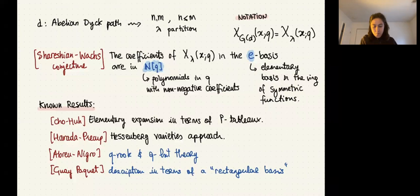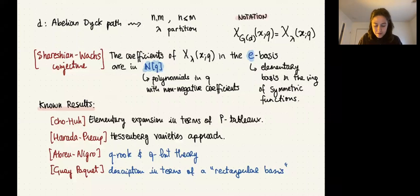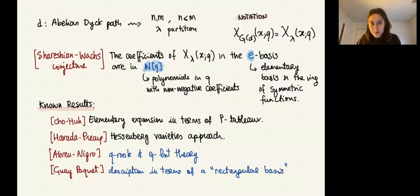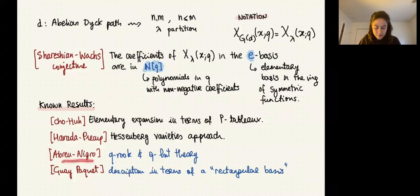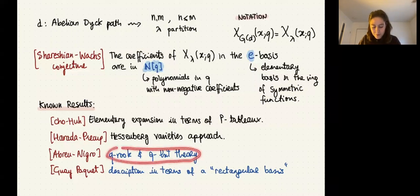Looking at the abelian path case, there are some known results toward this conjecture. In particular, Tymoczko and Huh proved an expansion in terms of p-tableaux. Hadada and Precup studied these symmetric functions from the Hessenberg varieties approach and have several papers on that. I want to focus on two others: the Abreu-Nigro result, which gave a relation of these symmetric functions in terms of q-rook and q-hit theory, and White-Packet, who gave a description in terms of a rectangular basis.